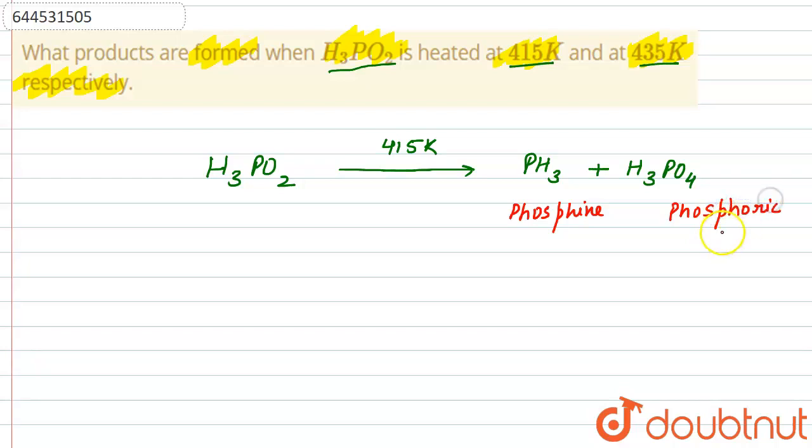And if we heat this H3PO2 at 435 Kelvin, then again these products will be formed. That is, in both cases, products will be formed the same because if we heat this H3PO2 at a...